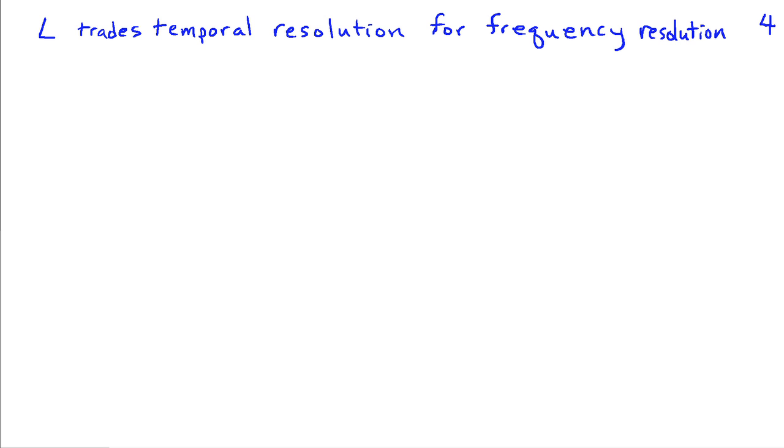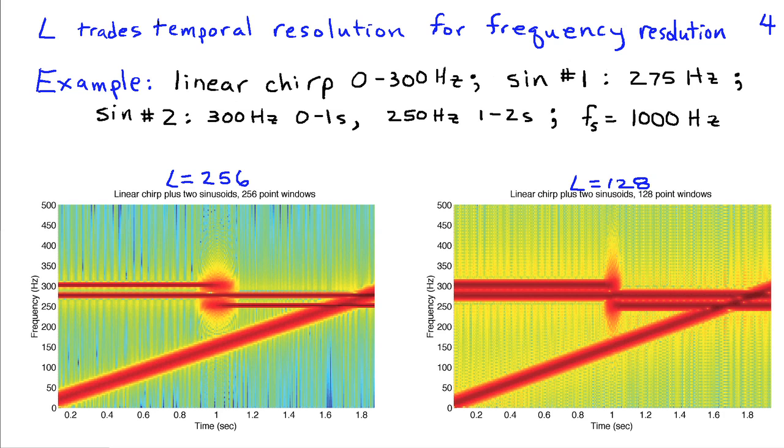Now the length of the segment, capital L, trades the temporal resolution for frequency resolution. As L increases, we're using a longer section of time and the segment length increases, so we're not able to see details that change in time as well. But as the segment length increases, we get better resolution in the frequency domain. We can illustrate that with another example here.